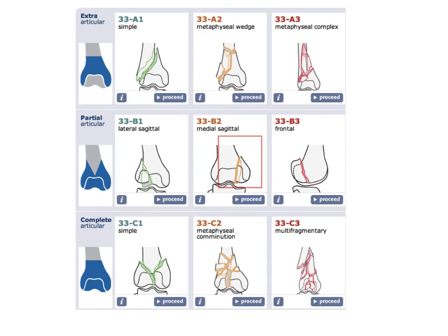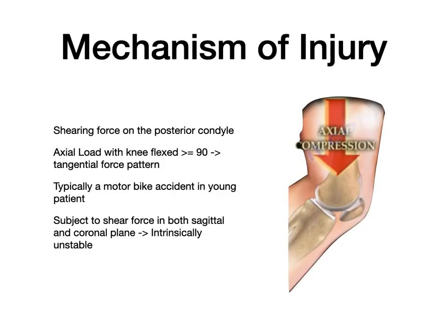In the AO classification, they typically fall in the 33-B3 region describing the coronal fracture. The mechanism of injury is a shearing force on the posterior condyle, typically occurring when an axial load is applied to a knee flexed beyond 90 degrees, resulting in a tangential force pattern. The more the degree of flexion, the more anteriorly the fracture line exits. These are typically seen in motorbike accidents in young patients or when someone brakes very hard with the leg at the brake pedal.